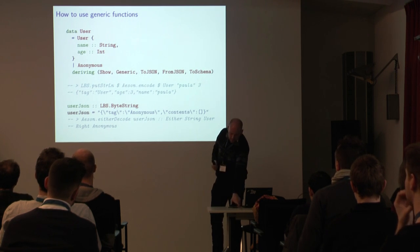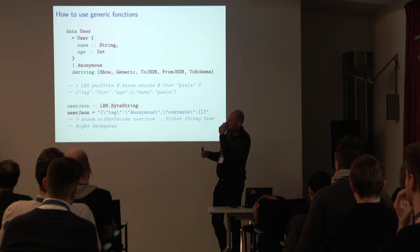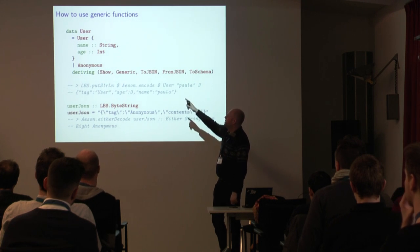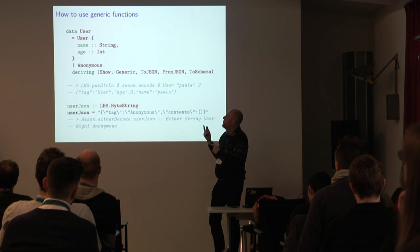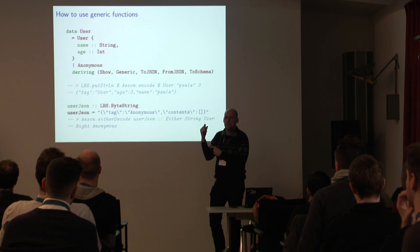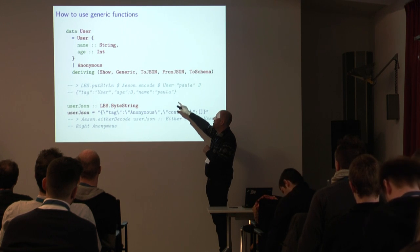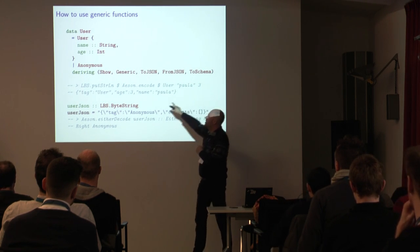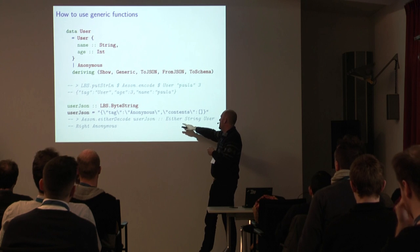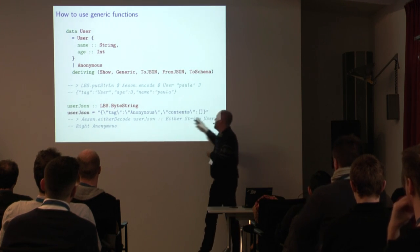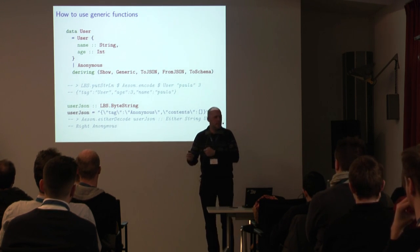We've already seen in the code how you use generic functions. In the slides, we're going to use this algebraic data type that actually has two constructors — user and anonymous — and one of them has two fields. Here again, we have the AESON example which says encode this user in JSON. And here's the other direction, where you say: I have this JSON and I want to decode it.